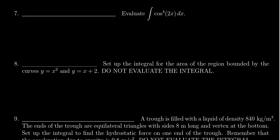Let's look at the solution to question 7 from our midterm exam in Calculus 2, Math 1220. You're asked to evaluate the integral cosine to the fourth of 2x dx.